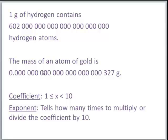We also have an example of a really small number. The mass of an atom of gold is .0000000327 grams, and as you can see, because the decimal is all the way over on the left-hand side, it's a really tiny number.